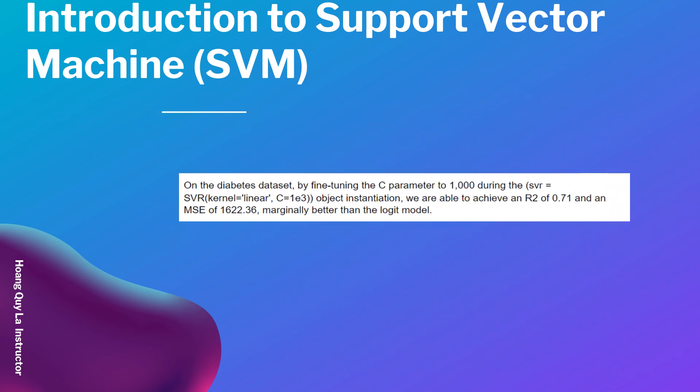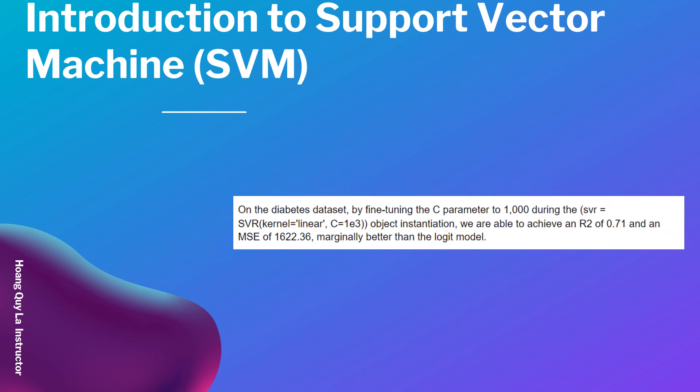On the diabetes dataset, by fine-tuning the C parameter to 1000 during object instantiation — SVR(kernel='linear', C=1e3) — we are able to achieve an R-squared of 0.71 and a mean squared error of 1622.39, marginally better than the linear model. This shows that accuracy improves significantly by using the Support Vector Machine, making it a really important algorithm in machine learning.